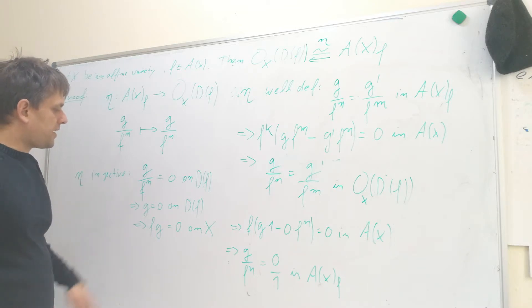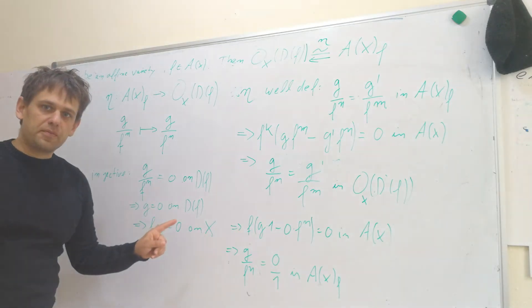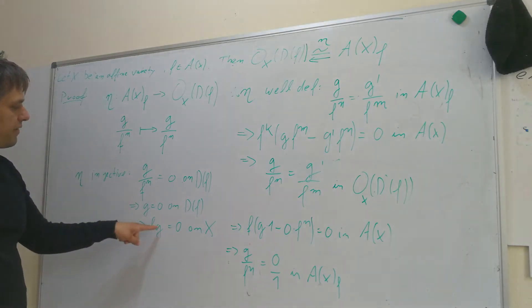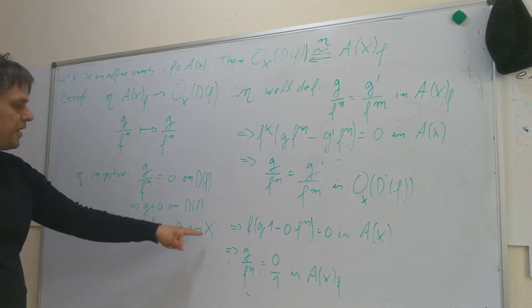But now, using the identity theorem for regular functions, we can conclude that f·g is equal to zero on all of x.